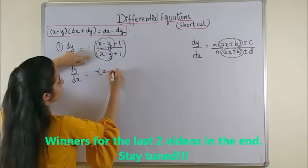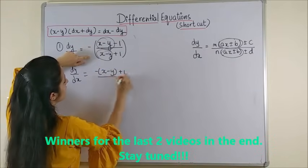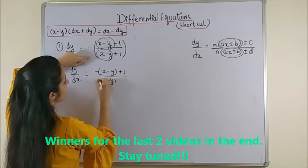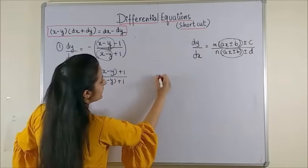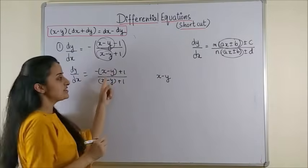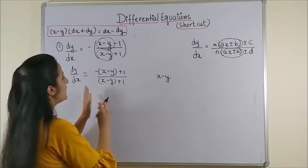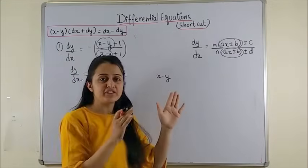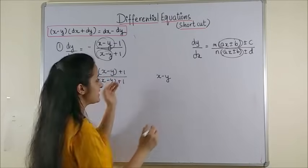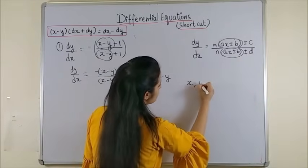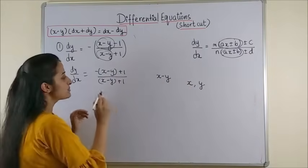Like here, it will be minus of x minus y plus 1 upon x minus y plus 1. Write the common factor here which is x minus y. And now, since your entire differential equation is in terms of x and y, so I mentioned that as a point here.